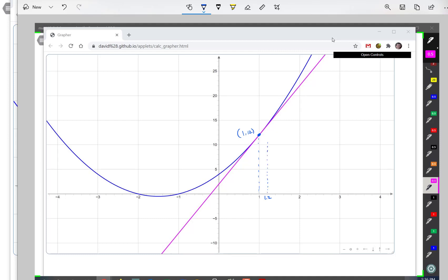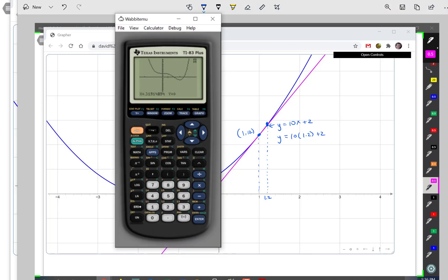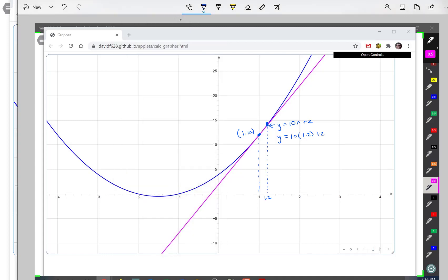So at 1.2 both the tangent line and the curve has a particular y value. We can calculate each of these. So we can calculate the tangent line which was y equals 10x plus 2 at that particular point and that will give me, let's see, 10 times 1.2 plus 2 so 14. Oh, okay. Yeah, so that gives me a height of 14. I guess that makes sense looking at my scale here.